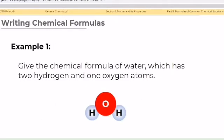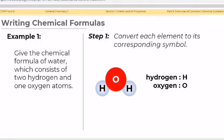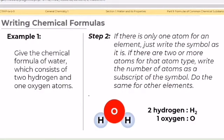Example 1: Give the chemical formula of water, which has two hydrogen and one oxygen atoms. Step 1: Convert each element to its corresponding symbol. Step 2: If there is only one atom for an element, just write the symbol as it is. If there are two or more atoms for that atom type, write the number of atoms as a subscript of the symbol. Do the same for other elements.